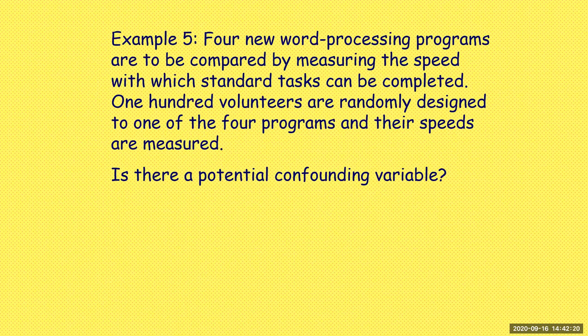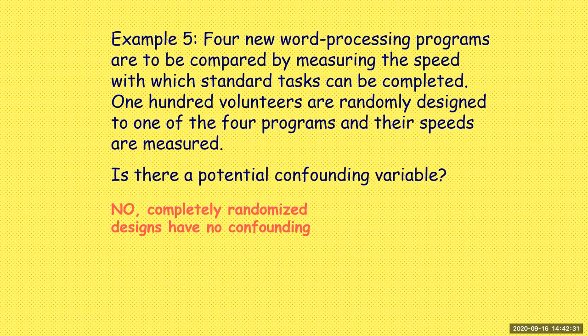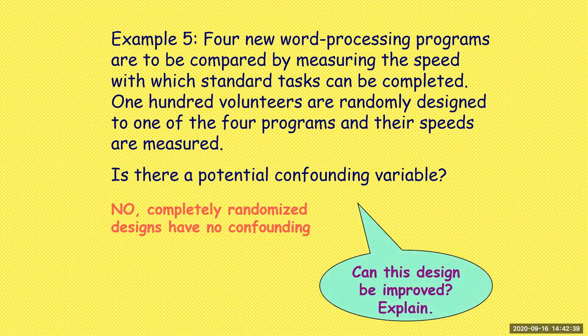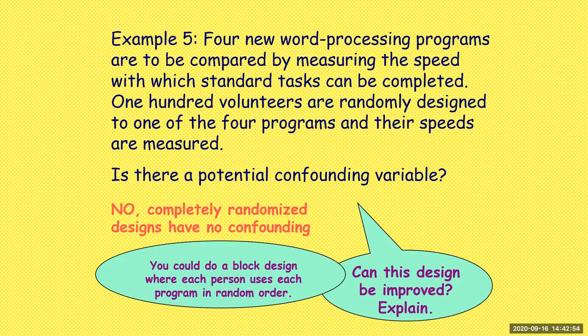Is there a potential confounding variable — something else affecting the data besides word processing? In a completely randomized design you shouldn't have confounding variables. But can we improve upon this design? We could do a block design where each person uses each program in random order, or maybe separate by age to see if age makes a difference. There are ways to tailor results further.